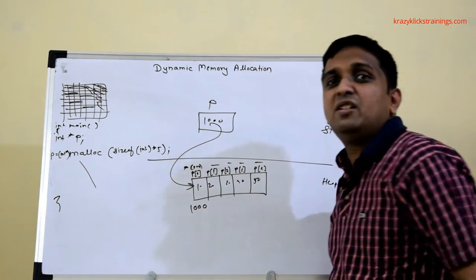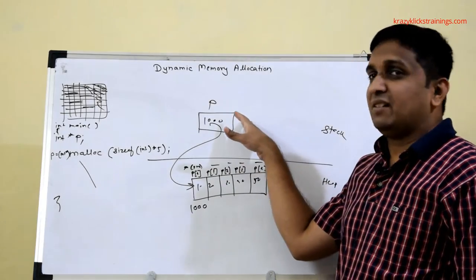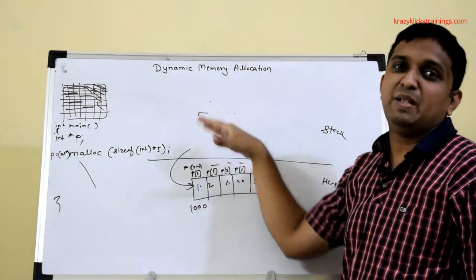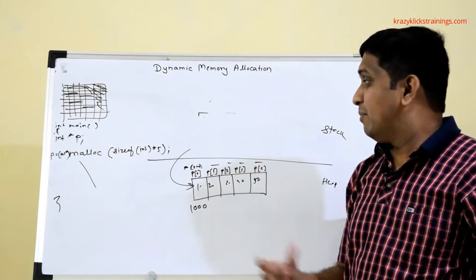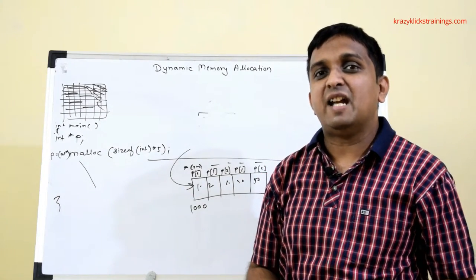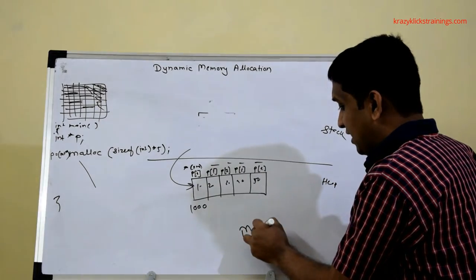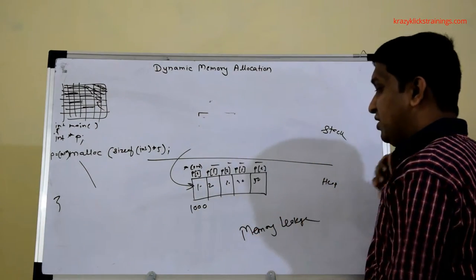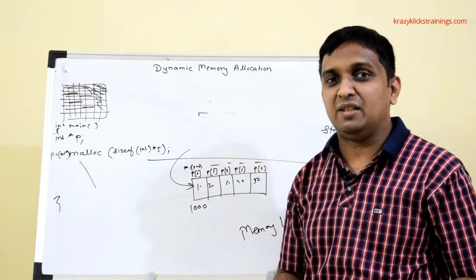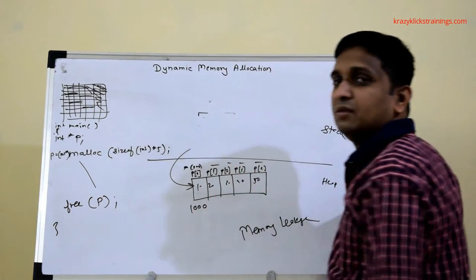When the main function ends, all local variables of main will be destroyed. The memory on the stack - including pointer p - is freed automatically by the compiler. But the memory allocated on the heap will not be freed automatically and will remain there. If another application is running simultaneously it cannot use that block, and this is termed memory leakage. If you don't want memory leakage you have to free this memory explicitly using the free function: free(p).